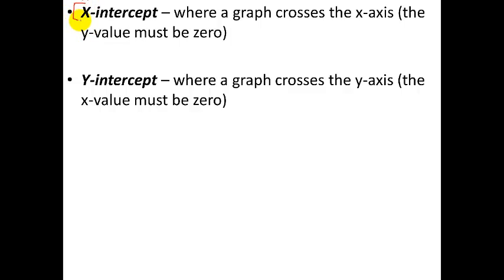Two more vocab words. These are ones we talked about before, intercepts. The x-intercept is where on the graph you cross the x-axis, and to find where you cross the x-axis, the y value is zero. Let me draw a picture here so we can kind of illustrate this.